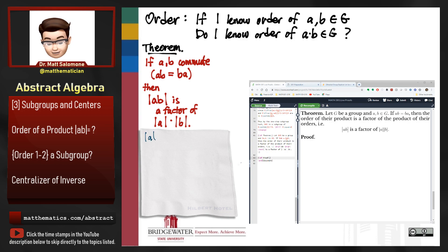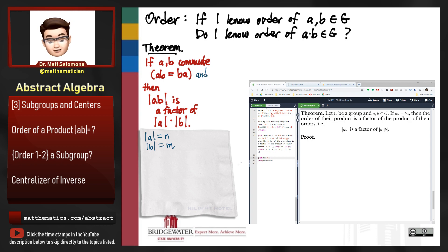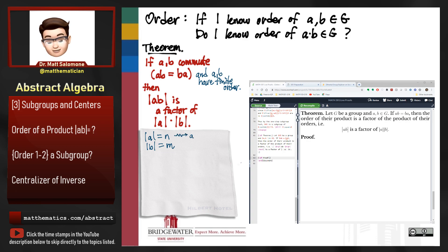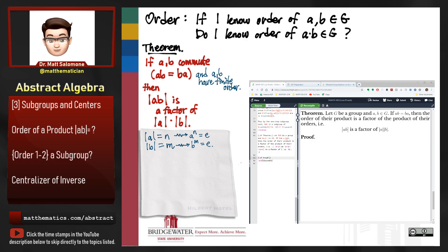On the napkin, let me give their orders names: let the order of A be N and the order of B be M. In order to make this theorem work, we probably need A and B to have finite order, so that N and M are actually numbers. If A and B have infinite order, we can get silly stuff like what happened with our R* example. So A to the N equals the identity, and B to the M equals the identity — those are the two things I know based on the assumption that the order of A is N and the order of B is M.